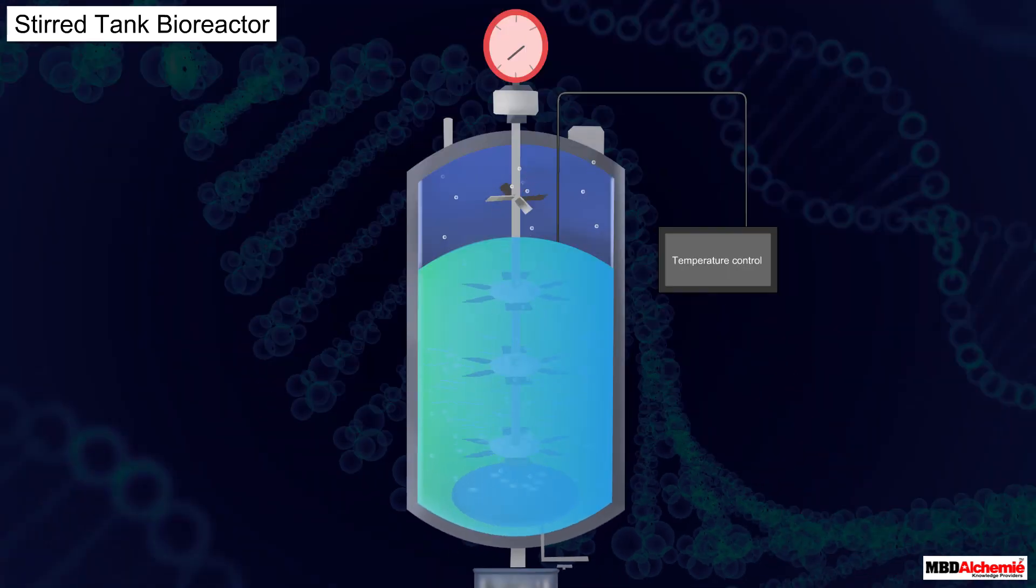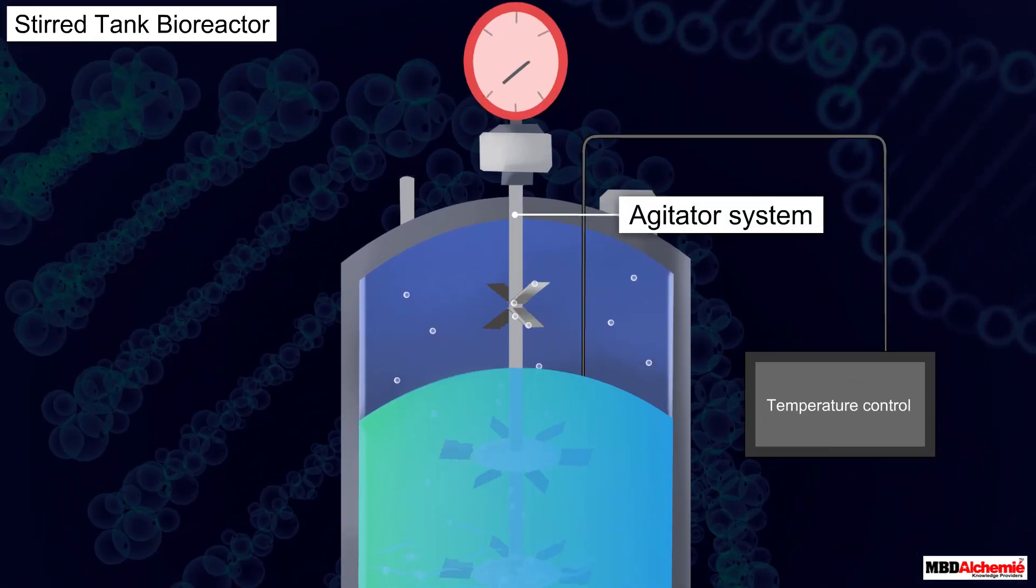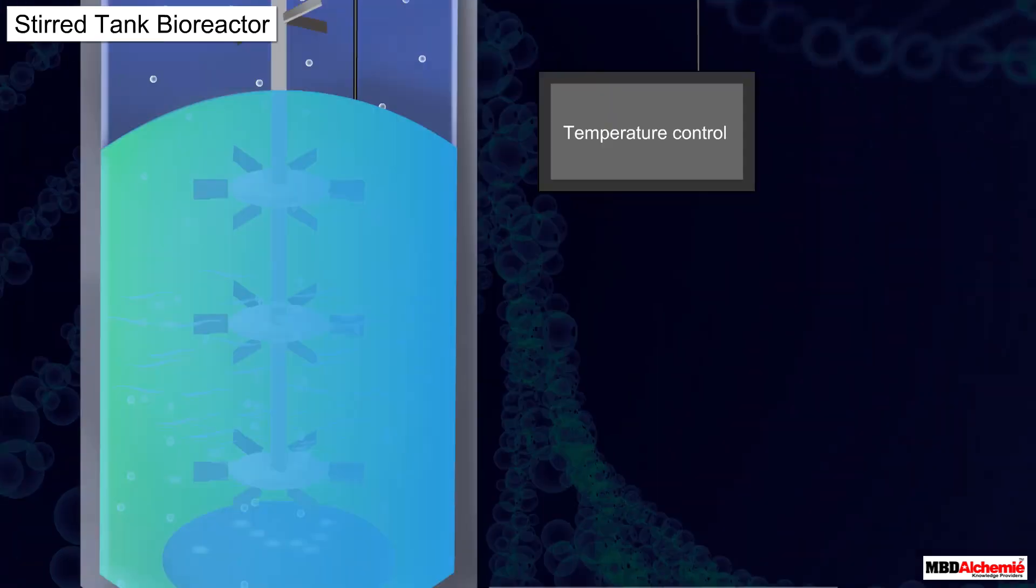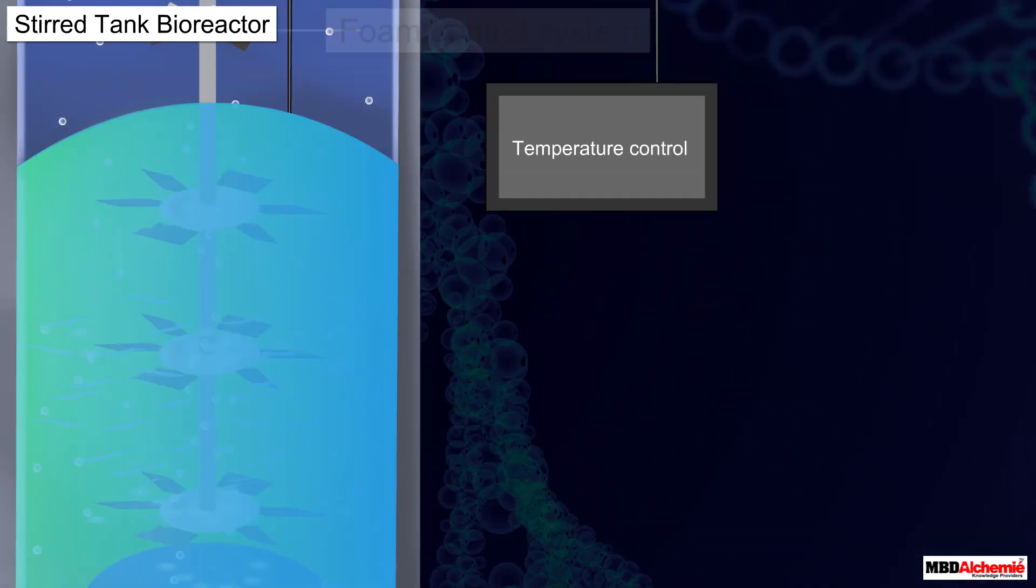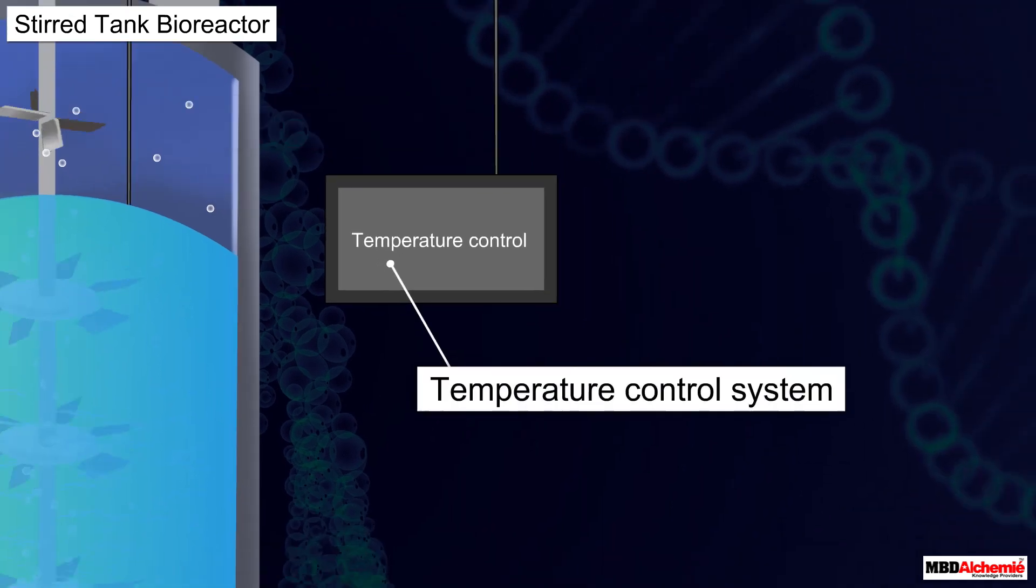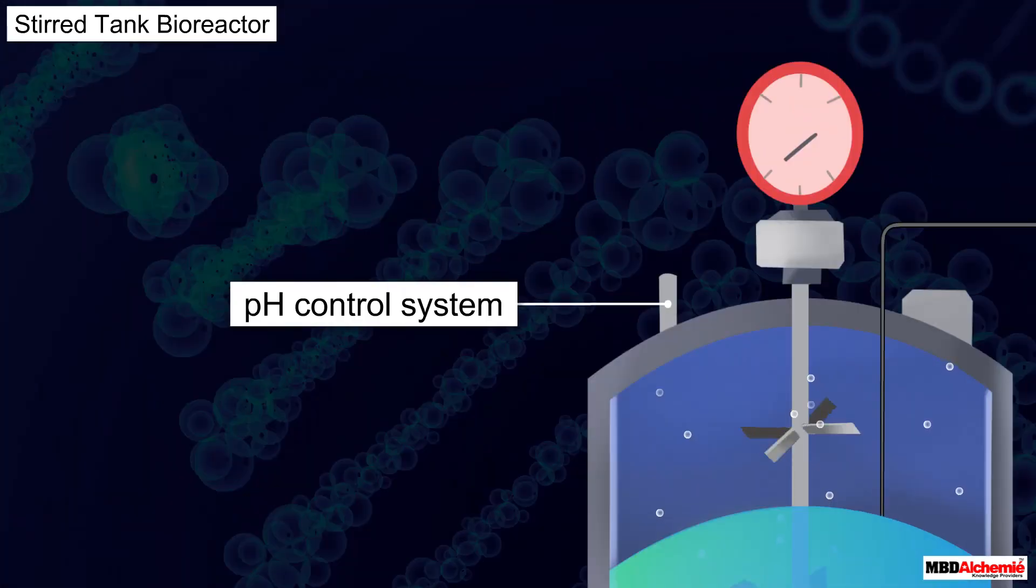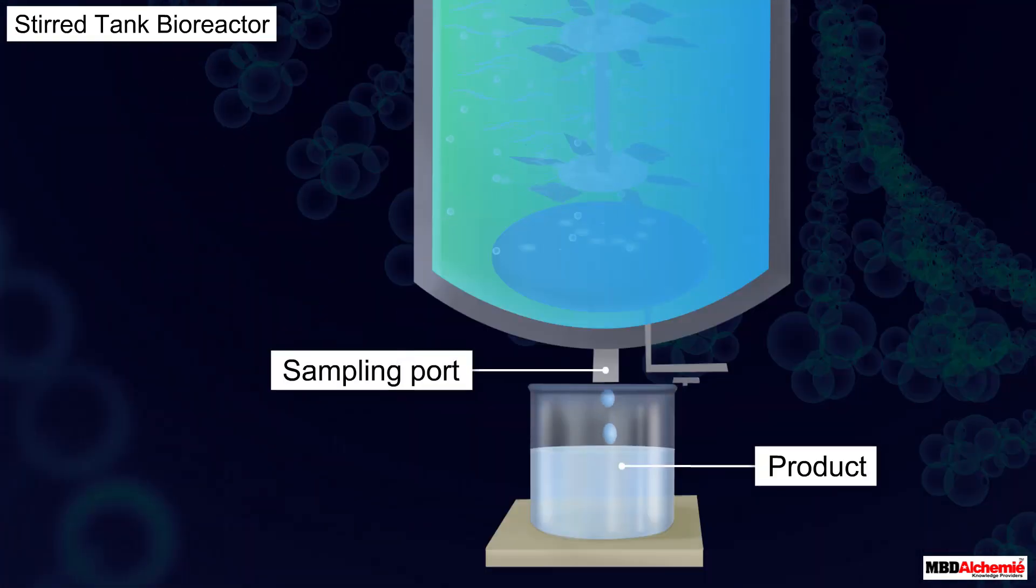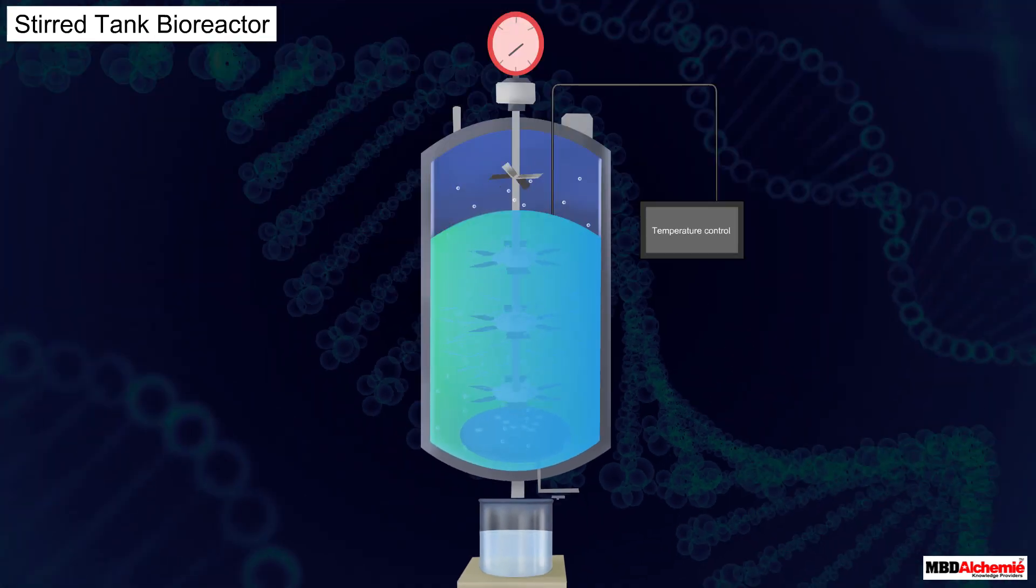The reactor consists of an agitator system to mix the contents, an oxygen delivery system to supply oxygen, a foam control system, a temperature control system, a pH control system, and a sampling port to withdraw the product periodically.